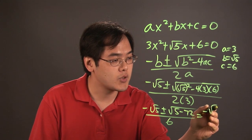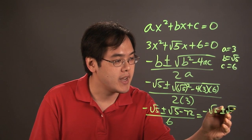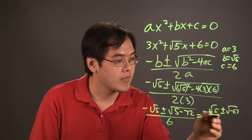And so you have negative square root of 5 plus or minus square root of negative 67 over 6.